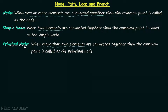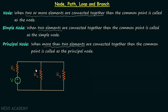Now we will look at an example to understand how to find out if a node is a simple node or a principal node. In this example we have four elements total — one voltage source and three resistors. Resistor R1 is connected to the voltage source V, and here two elements are connected together, so this common point is the simple node. At the next node, three elements are connected together, satisfying the condition of more than two, so this node is the principal node.